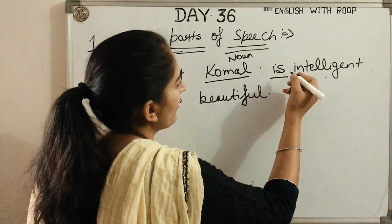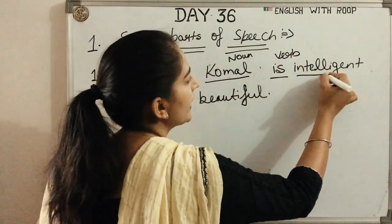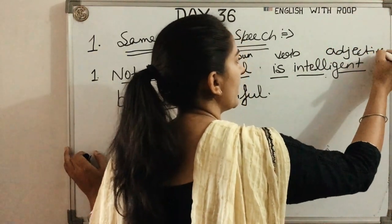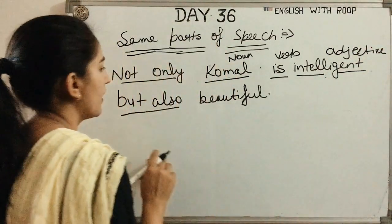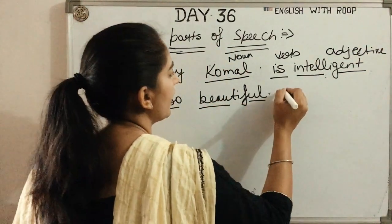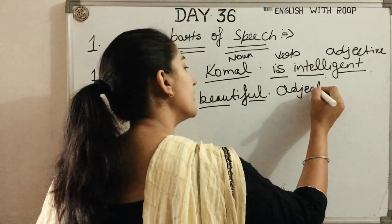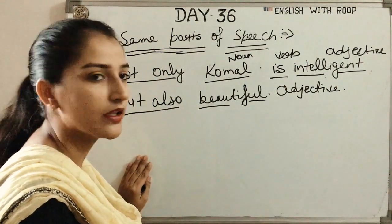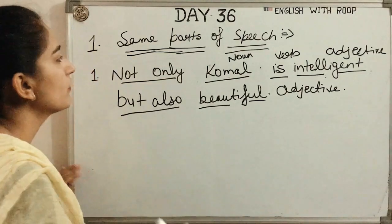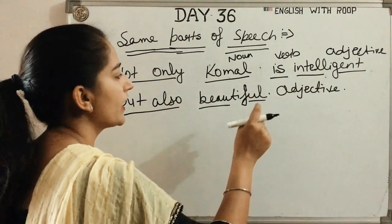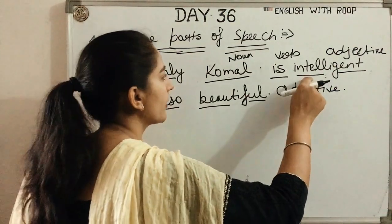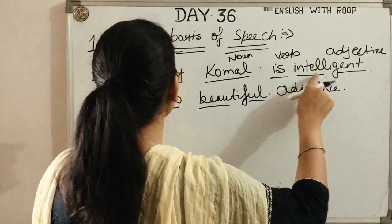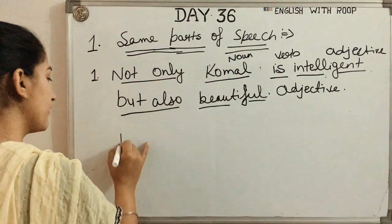Now, not only...but also. For example: She was not only upset, but also angry. Not only...but also is used to add additional information beyond what is first stated. We should know how to use this structure properly.